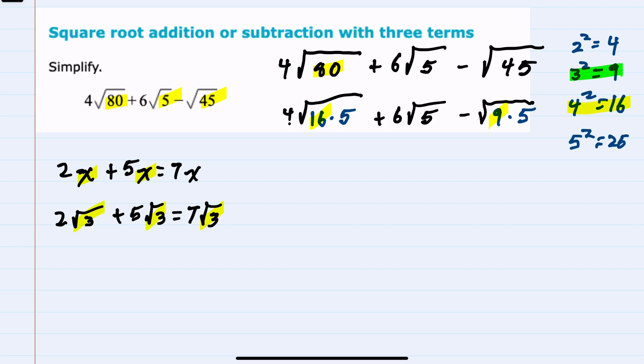Since I can simplify the first and the last here, for the first, this 16 comes outside as a 4 and gets multiplied with the 4 that's already outside. The second term does not simplify. And for the third term, the 9 comes outside the radical as a 3, since the square root of 9 is 3, leaving me with the 5 inside the radical.